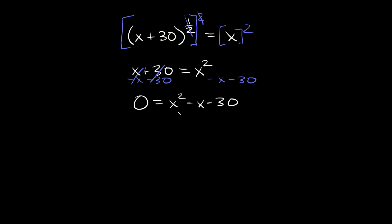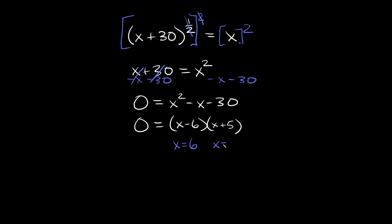So now we can factor this trinomial. We need factors that multiply to 30, so we get (x minus 6)(x plus 5). That gives us two answers: x is equal to positive 6, and x is equal to negative 5.